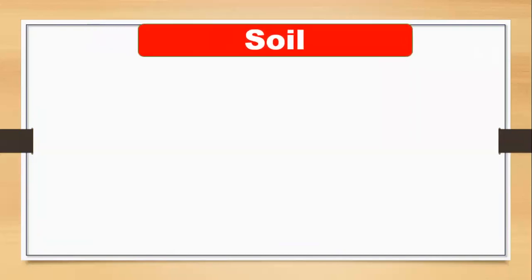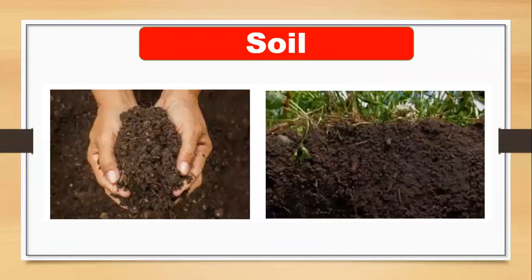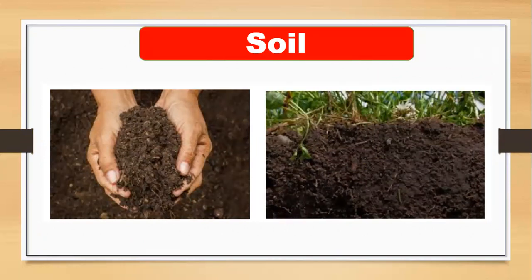Soil is very important to grow our food, so soil is a natural material. It comes from nature and you can't change it. These are the plants growing in soil, so this is a natural material. Soil, sand, and rocks are all natural materials.